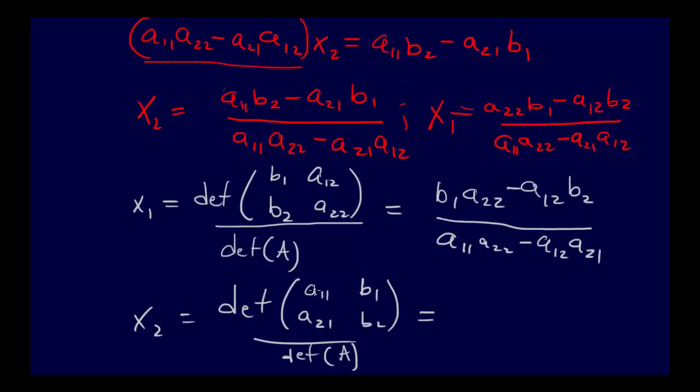If you look, a11 times b2 minus a21 times b1, that's our numerator, and our denominator is the same, the determinant of A.